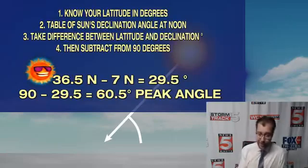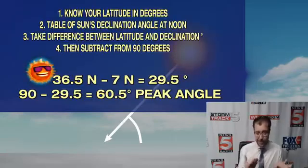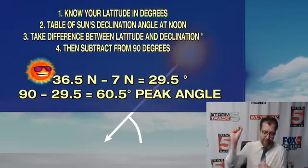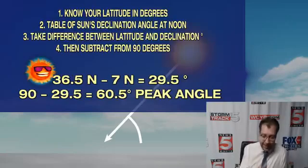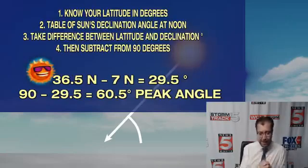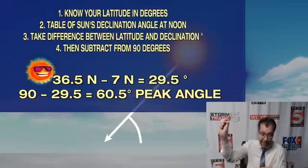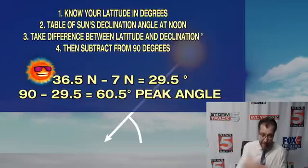The second thing you need to know is the table of the sun's declination angle. This is something you can find online, so it's really easy to find. You basically need to know where that peak sun angle is occurring at 90 degrees — you can find that easily online through one of those tables. Simply take the difference between your latitude and the sun's declination angle where it's at its highest point, that 90-degree angle, and then subtract that total from 90 degrees.